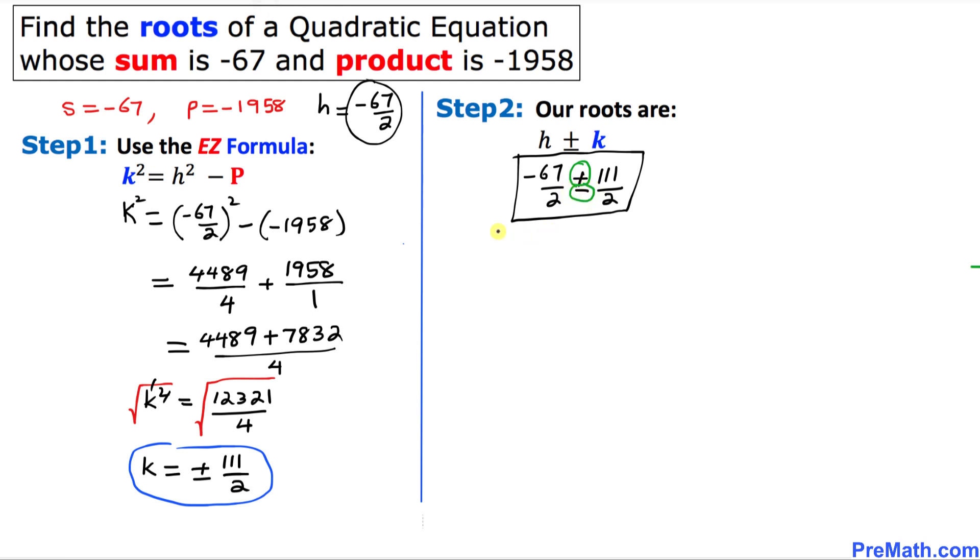Let's go ahead and do that one. So first number is negative 67 divided by 2 plus 111 divided by 2 and the other number is going to be negative 67 divided by 2 minus 111 divided by 2. Let's simplify the first these two fractions. 2 is our common denominator, negative 67 plus 111. When we add these two numbers, that is going to give us 44 divided by 2 and if we simplify, our first root is going to be 22.